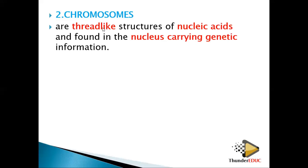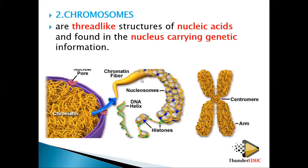If you look at the chromatin structure, it may look like noodles or spaghetti, but if you condense and shorten it, it forms chromosomes. So chromatin and chromosomes are the same but in different phases. The same information is carried inside, but chromosomes form during cell division when small additional elements are added.